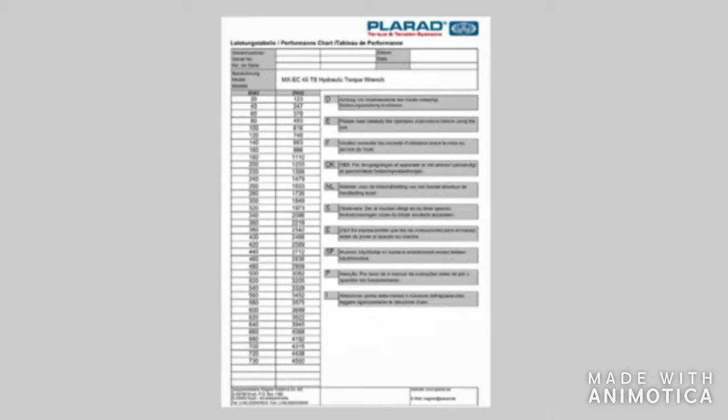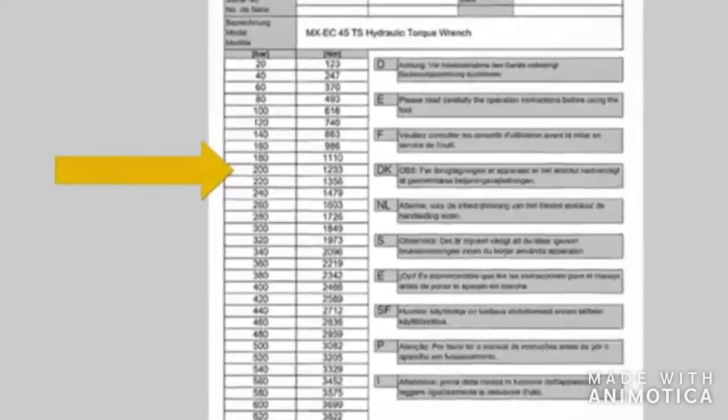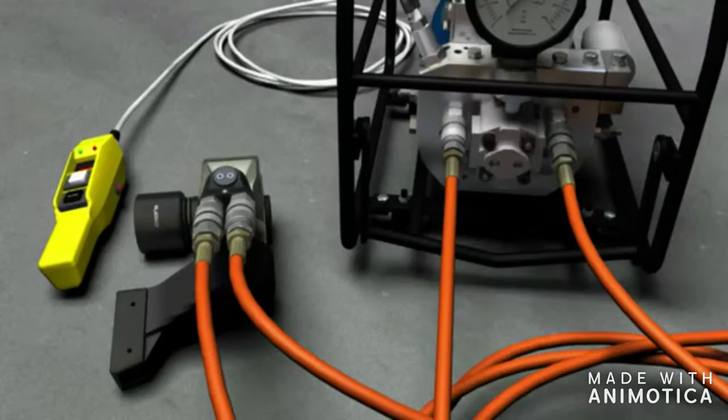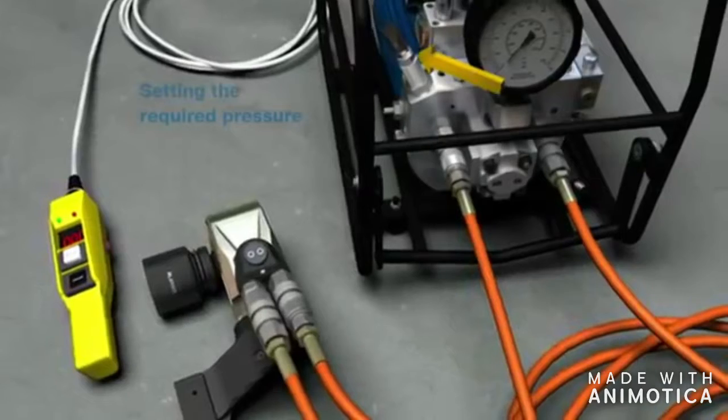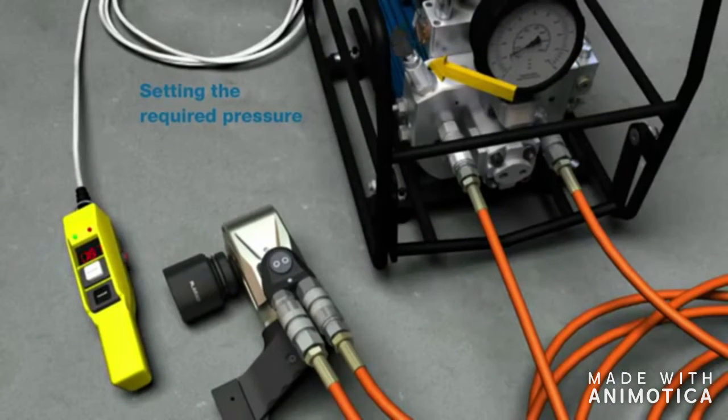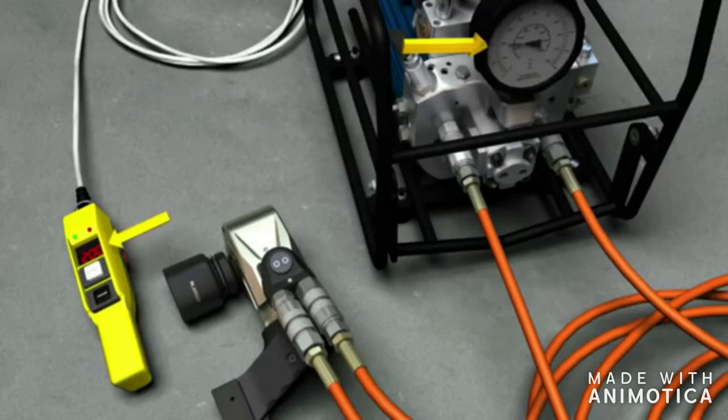For the correct pressure setting, refer to the torque table of the torque wrench. Press and hold the button manual with the power pack switched on. Set the required hydraulic pressure using the pressure adjusting valve. Release the button manual now.